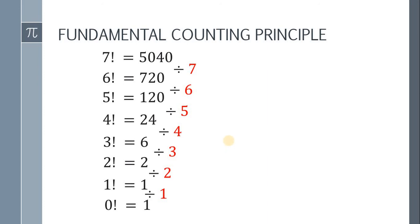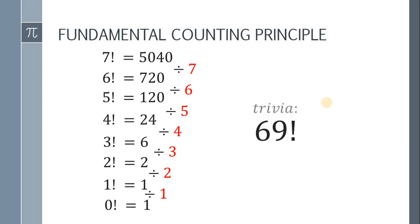Before we end, here's a little trivia: if you get a calculator and type in 69 factorial, that is the highest number your calculator can compute. The 70 factorial is already beyond what it can handle. So the highest factorial your calculator can compute is 69 factorial. And we're done.